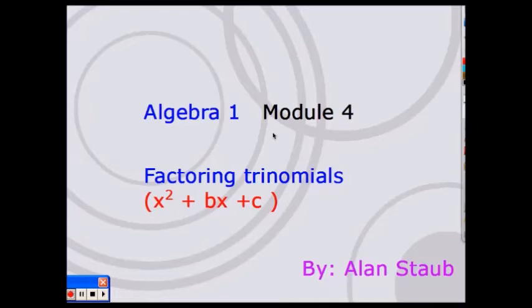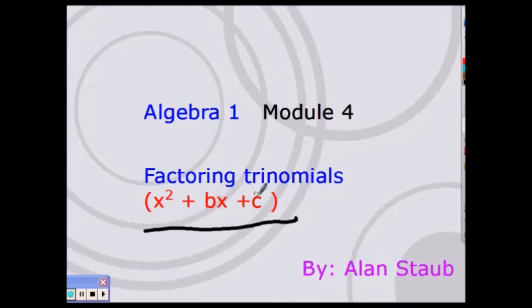Hello, this will be our first lesson in module 4 about factoring trinomials. The first type we're going to look at are the very simple ones. Normally it's going to be a variable squared plus a number times the variable plus a constant. Notice there is no coefficient here — having a coefficient there makes it a little bit more complicated, and we'll look at that next time.